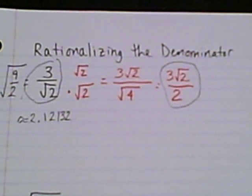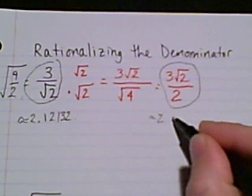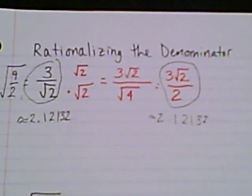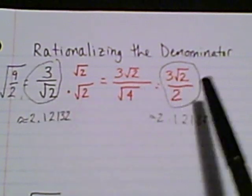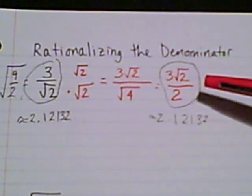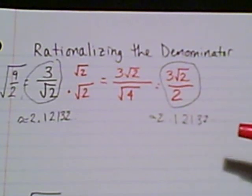Now if I come over to this side and put into the calculator 3 times square root of 2, and then take the answer and divide by 2, I get that exact same answer, about 2.12132 and so on. So I want to show you that we have not changed the value at all.